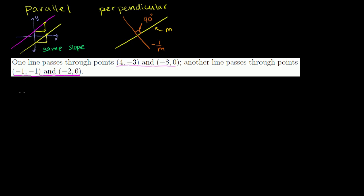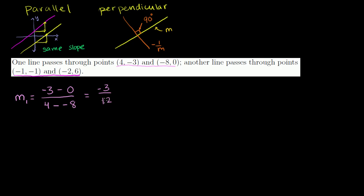For line 1, slope 1: taking (4, -3) as the finishing point, that's negative 3 minus 0 over 4 minus negative 8. This is equal to negative 3 over — the same thing as 4 plus 8 — negative 3 over 12, which equals negative 1 fourth. Divide the numerator and denominator by 3.